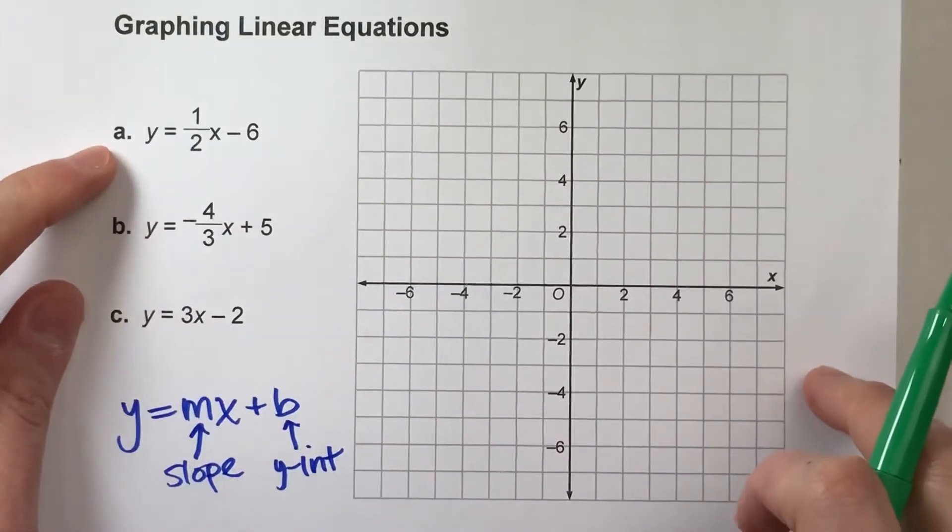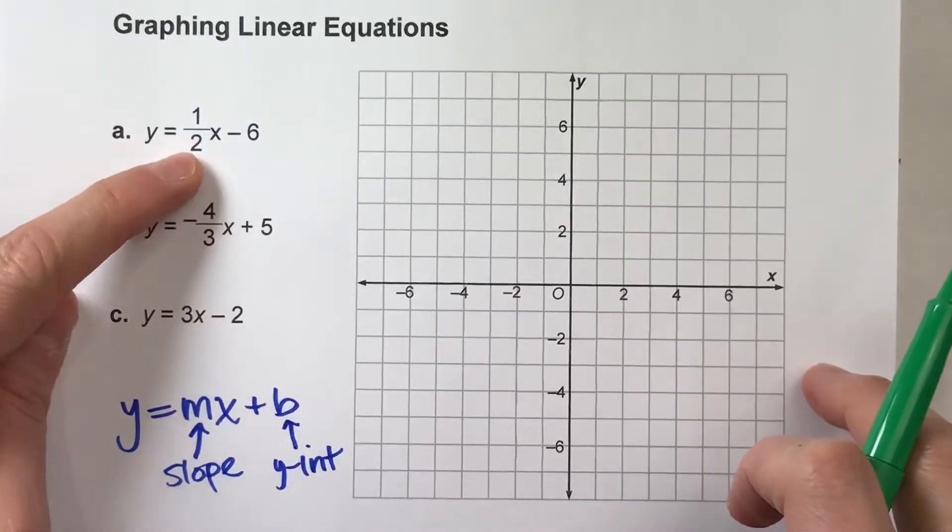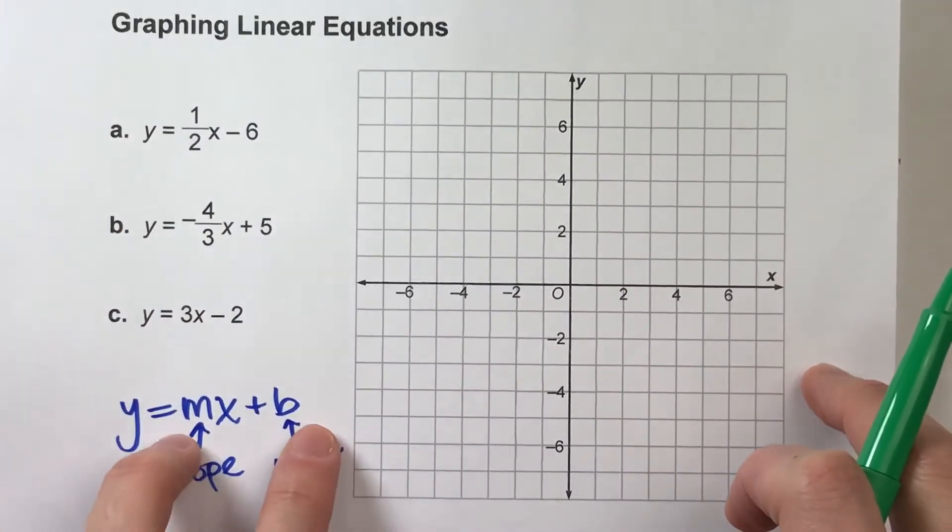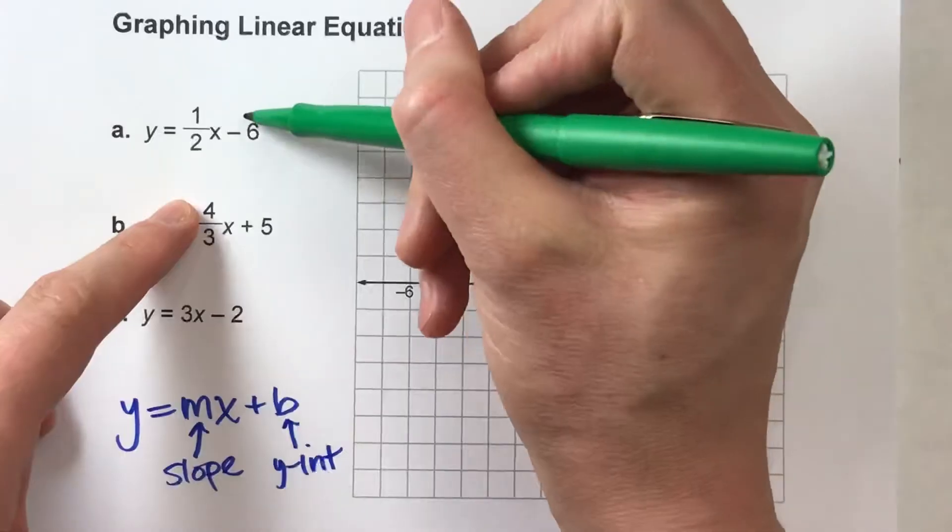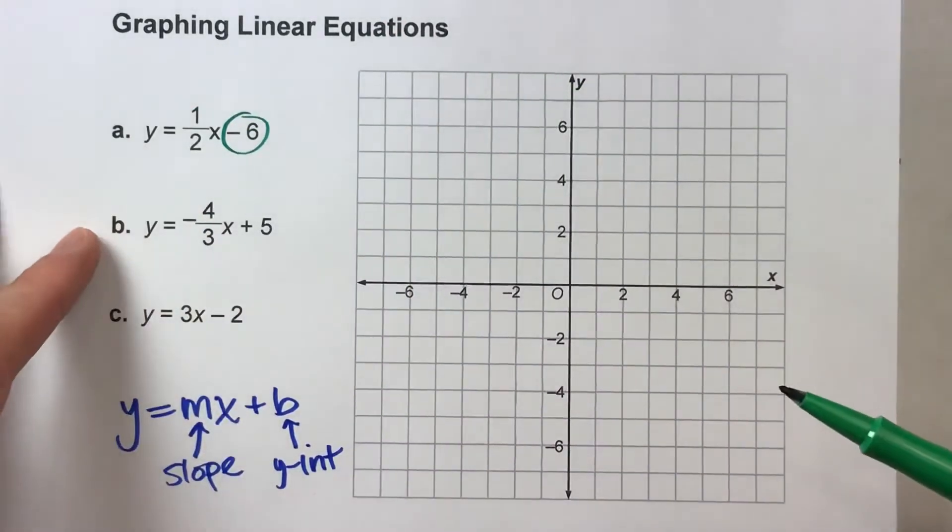So, for example, a, y equals 1 half x minus 6. We're looking at two things, the slope and the y-intercept. Let's start at the y-intercept. We've got a minus 6 there.